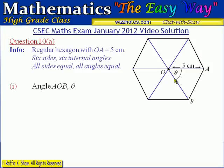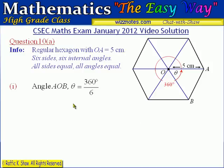Around the center we can make a circle that has a total of 360 degrees, and there are six of these theta angles inside that 360 degrees. So if we divide 360 by 6 we calculate angle AOB. The angle theta equals 360 degrees divided by 6, and each of those angles is therefore 60 degrees. That's the answer for part 1.